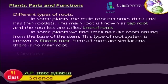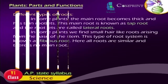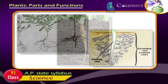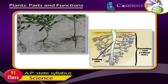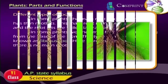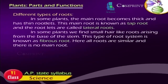Different types of roots. In some plants, the main root becomes thick and has thin rootlets. This main root is known as tap root and the rootlets are called lateral roots. In some plants, we find small hair-like roots arising from the base of the stem. This type of root is known as fibrous root. Here, all roots are similar and there is no main root.